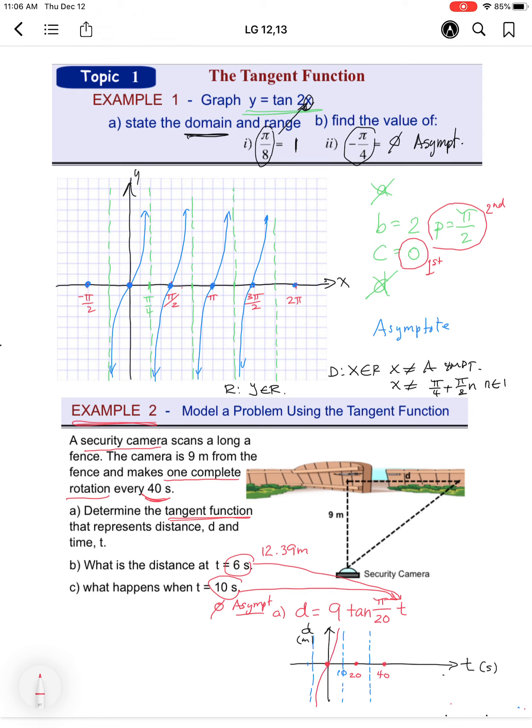It's going to hug the asymptotes. This is a steeper graph because of the 9. With a regular tan function, when you have a number in front, it's a vertical stretch—it stretches the graph vertically. That's a sketch showing what it would look like.